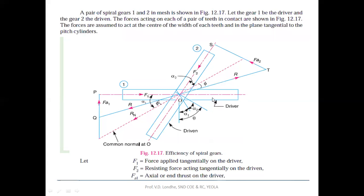Gear one is the driver gear to which input is given, and gear two is the driven spiral gear from which we get the output. At the point of contact O, the forces are acting. F1 is the force acting along the axis, F2 is another axial force, and this is the common normal drawn. Alpha 1 and alpha 2 are the spiral angles for the driver and driven gear respectively, and phi is the pressure angle.